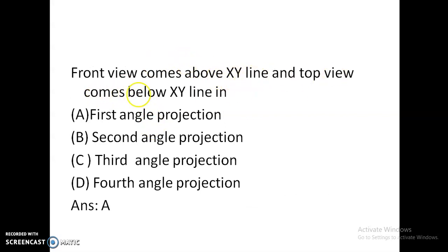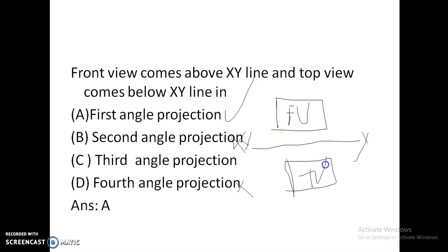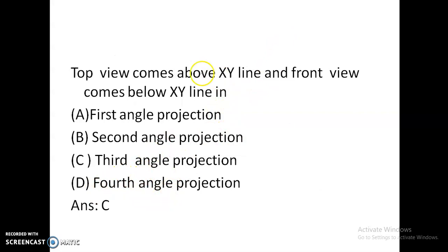The front view comes above the XY line and the top view comes below the XY line in first angle projection. There are two types: first angle projection and third angle projection. In first angle projection — which we follow in engineering graphics — the front view is above and the top view is below the XY line. In third angle projection, the top view is above and the front view is below the XY line.